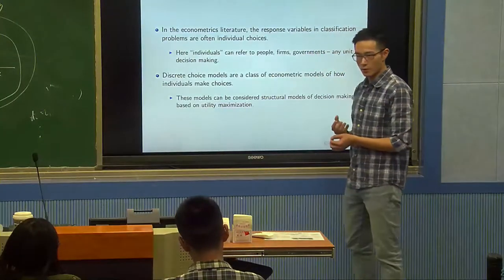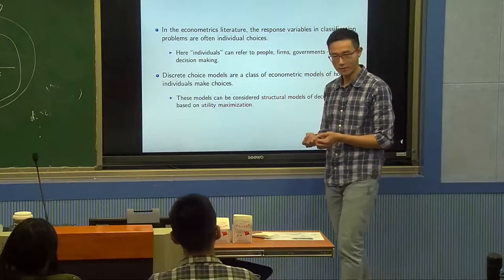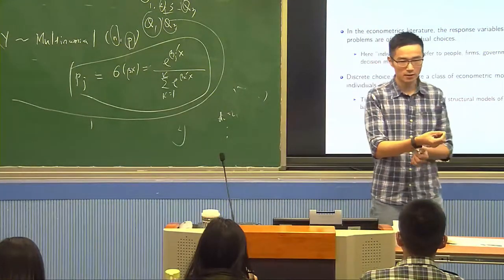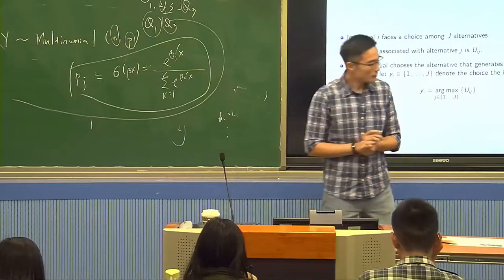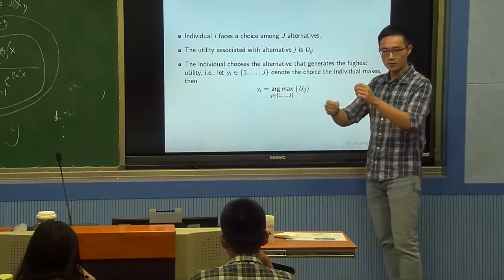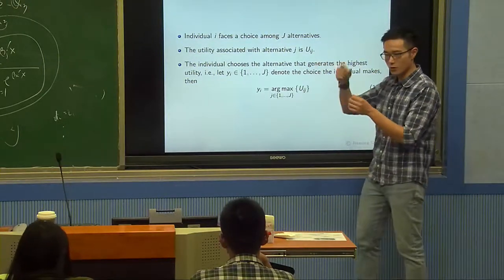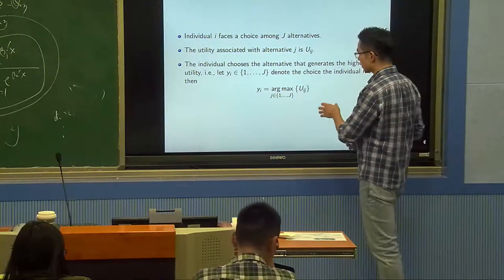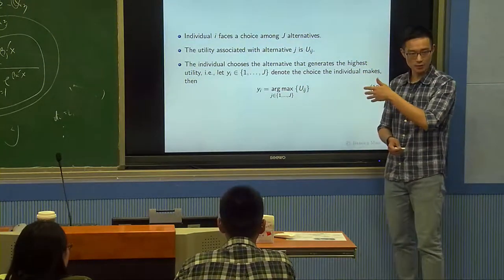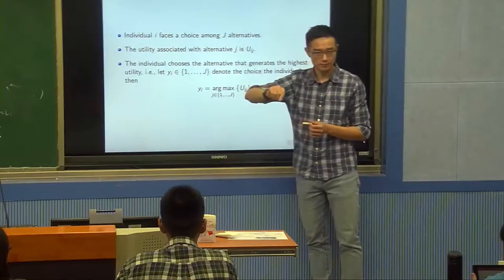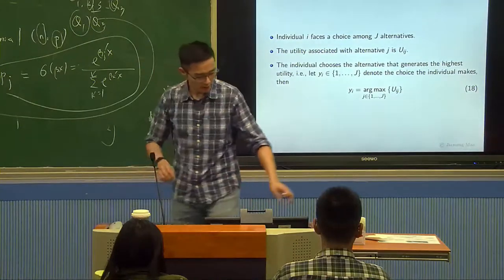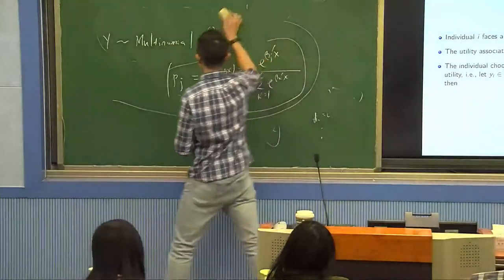This class of models is called discrete choice models (DCM). Discrete choice models are the traditional way economists model individual choice — how do individuals make choices among discrete alternatives? Individual choice is like a classification problem. In discrete choice models, we model each individual choosing based on utility maximization. Each individual i faces J choices, with utility uij for each choice j. The individual chooses yi = argmax over j of uij — whichever maximizes utility.